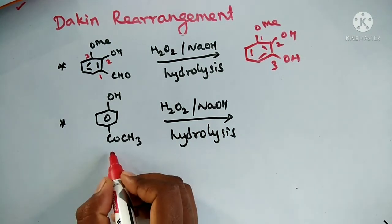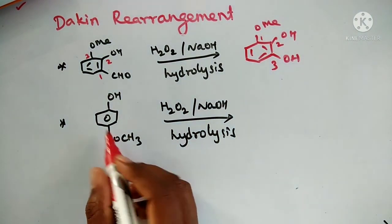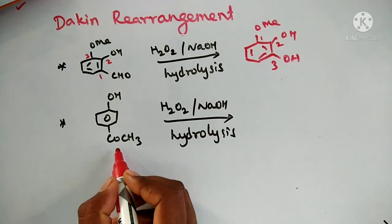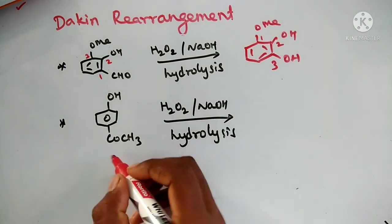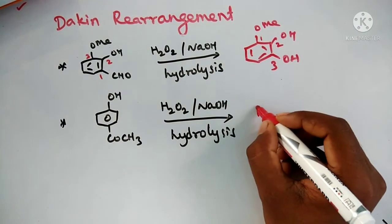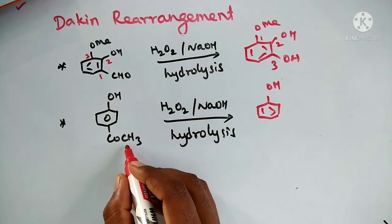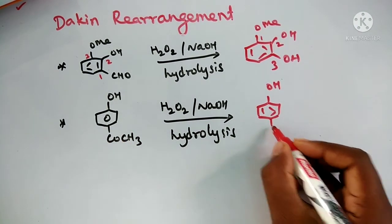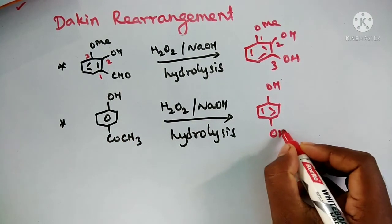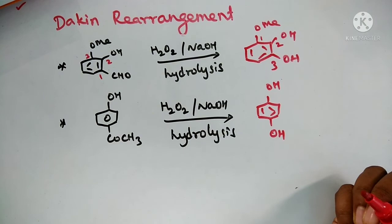And next example is para-hydroxy acetophenone. So what you will get is aldehyde. This ketone converted into alcohol. So you will get hydroquinone.